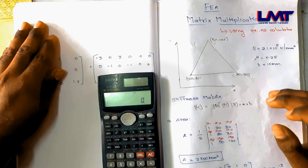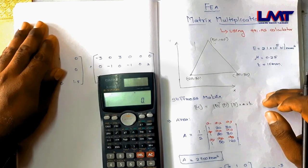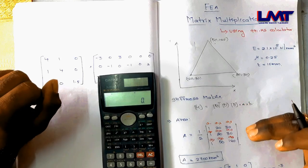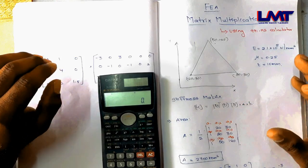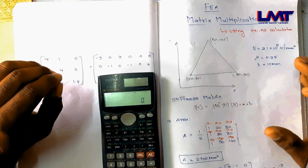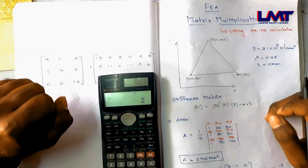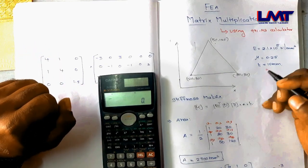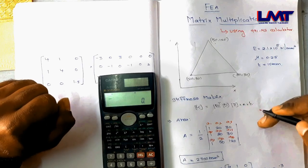If you look at this video, what are we trying to do? We go from D matrix to B matrix: B-transpose into D into B. We have a full stiffness matrix to work out, and we will use the calculator to solve it.